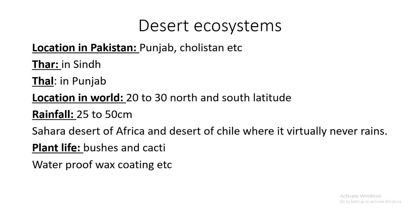This desert ecosystem is in Pakistan, southern Punjab — areas like Thal, Niya Waliyya, Bakher — where agriculture occurs. Around the world, deserts are found between 20 to 30 degrees north and south latitude, or in rain shadows of major mountain ranges.